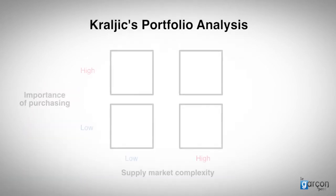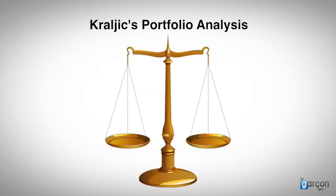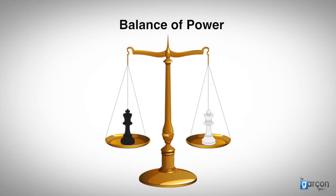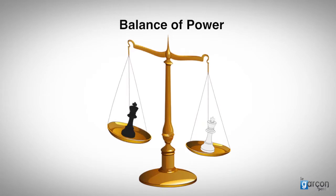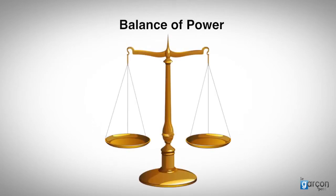Kralich suggested that each quadrant in the portfolio warranted different strategies, and the same tactic was not appropriate in each quadrant. Kralich also proposed that understanding the balance of power between the buyer and the supplier was important to determine whether the buyer's strategy was to maintain the current situation or to change the status quo. The balance of power is the net dependence of one party on the other, and Kralich suggested a number of criteria were needed to understand which party enjoyed the balance of power.